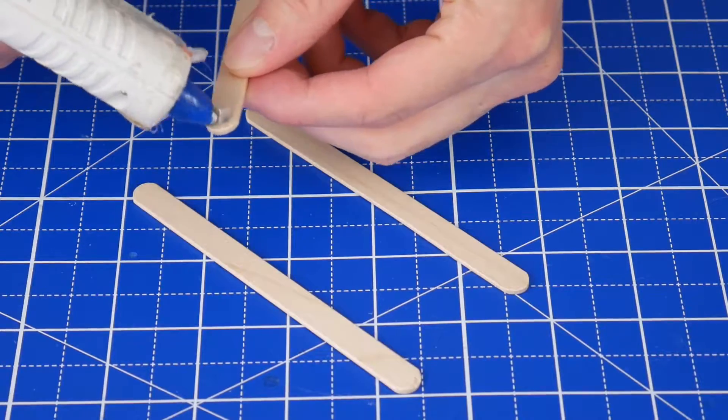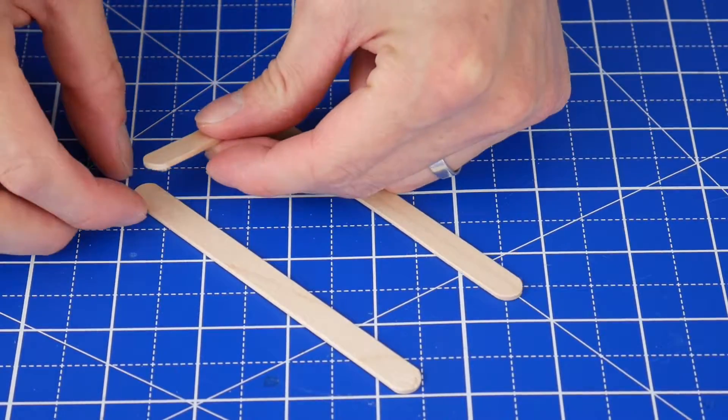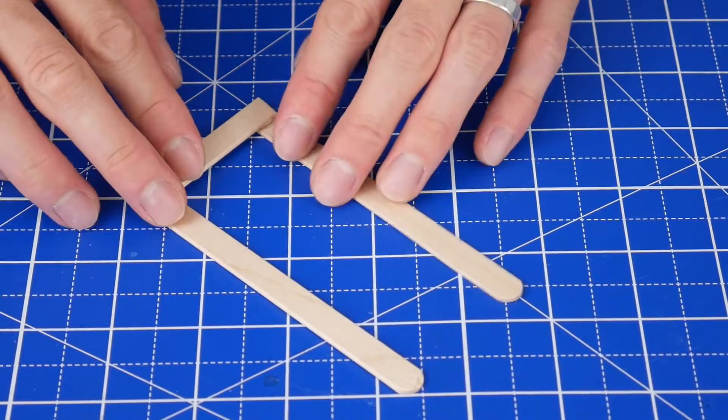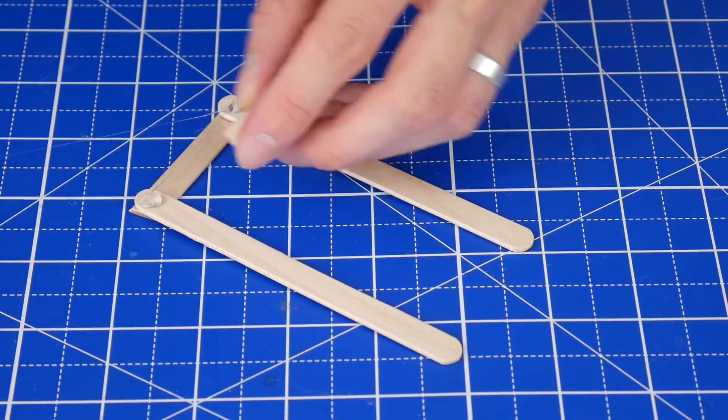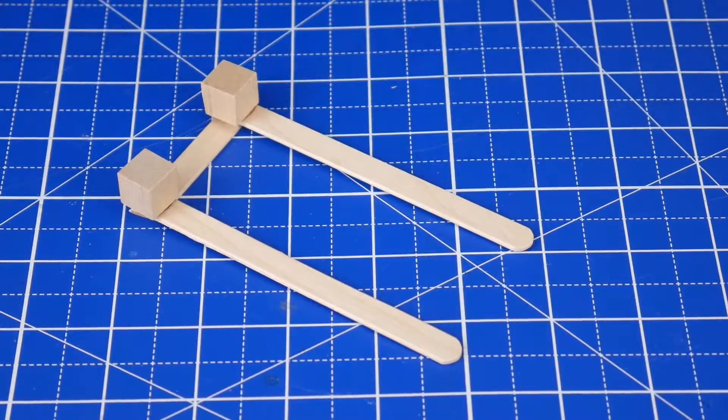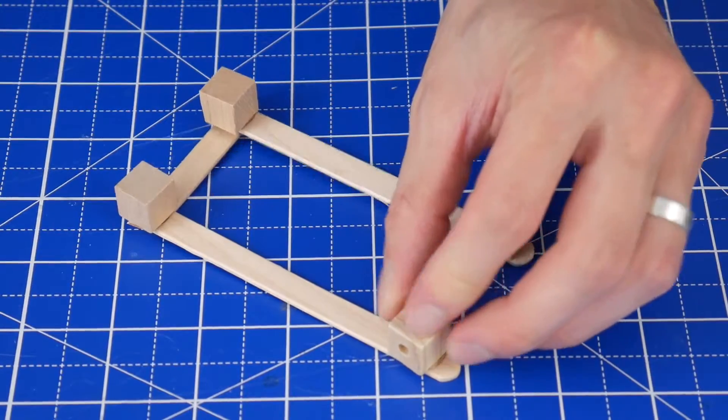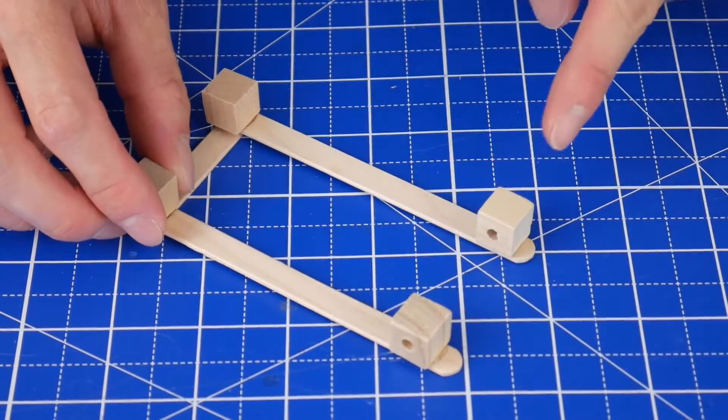First, connect two regular craft sticks together using hot glue and one of the half stick pieces. Flip it over, then glue two regular cubes at the corners that are above the half stick piece, and then glue two cubes with holes onto the other end, making sure that the holes line up.